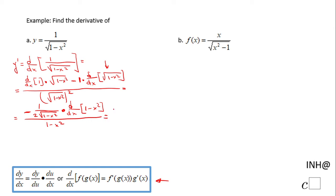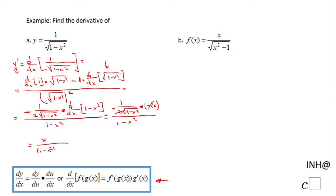So we get negative 1 over 2 times the square root of 1 minus x squared — the first part of the numerator of this complex fraction — times the derivative of 1 minus x squared, which is negative 2x, over 1 minus x squared. You notice these two cancel out, and the negatives also cancel out. The final answer is x over (1 minus x squared) times the square root of 1 minus x squared. This is y prime, or dy over dx.